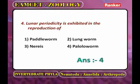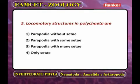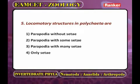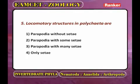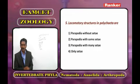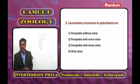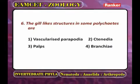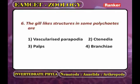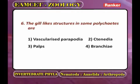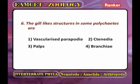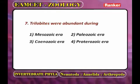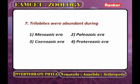Fifth: locomotory structures in Polychaeta — locomotion is mainly by bilobed parapodia with many setae. Sixth: gill-like structures in some Polychaeta — vascularized parapodia help in respiration. Seventh: Trilobites, the first subphylum of Arthropoda, are now extinct — they were abundant in the Palaeozoic era. Eighth: habitat of Trilobites — all are exclusively marine.